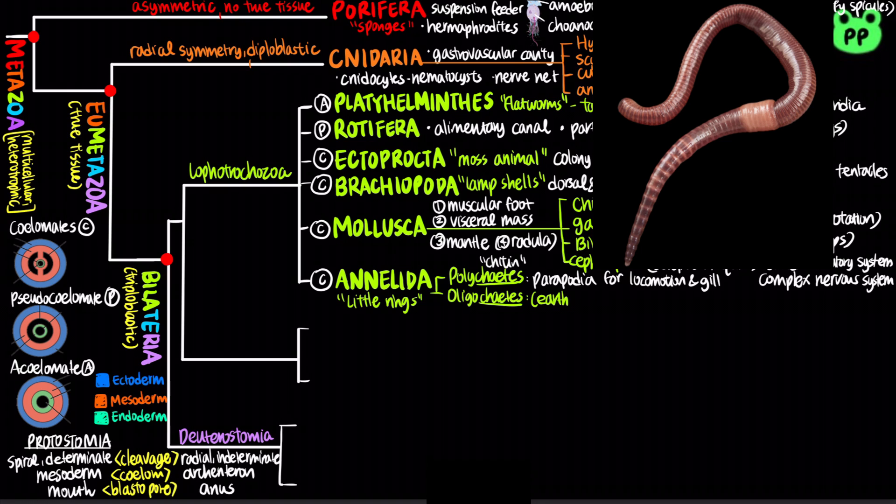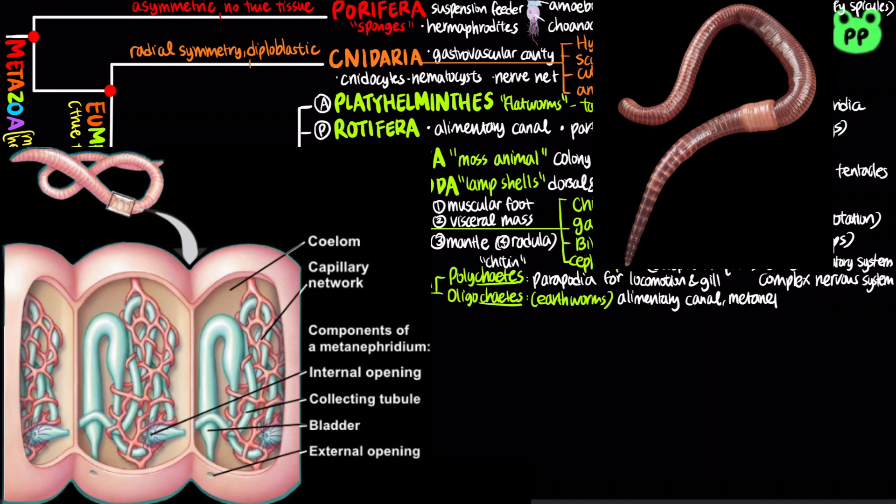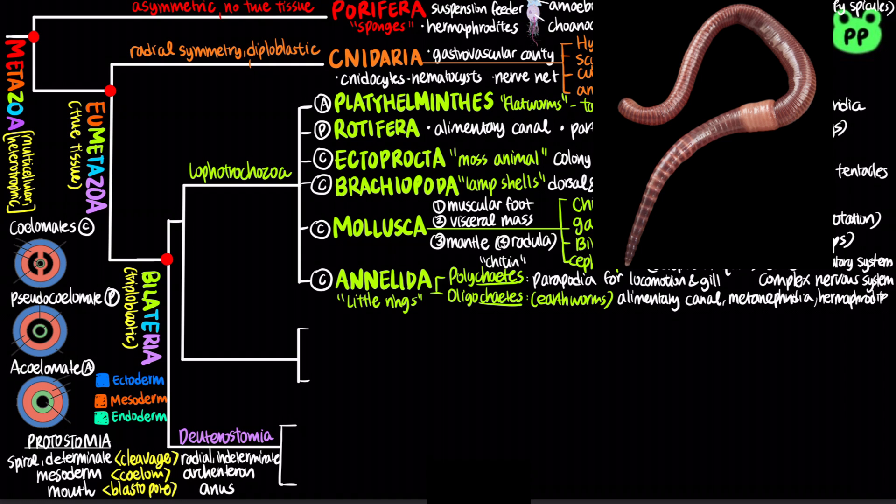Earthworms eat through soil, extracting nutrients as the soil moves through the alimentary canal. They contain metanephridia that maintain osmotic balance and excrete waste. They are hermaphrodites and have a closed circulatory system.